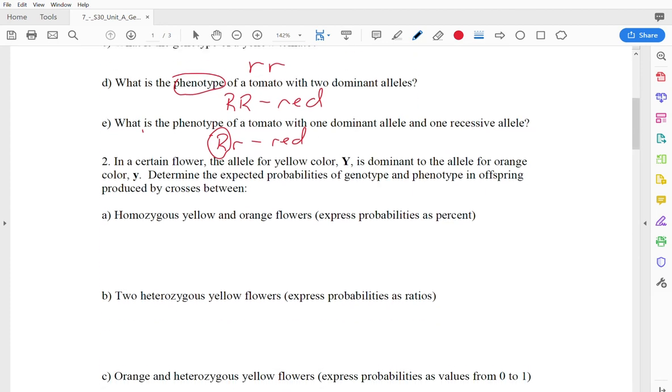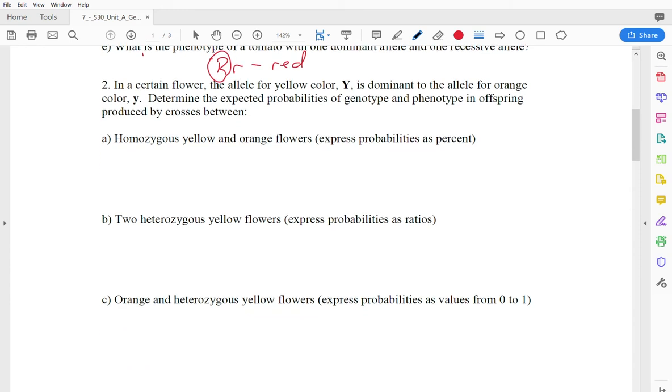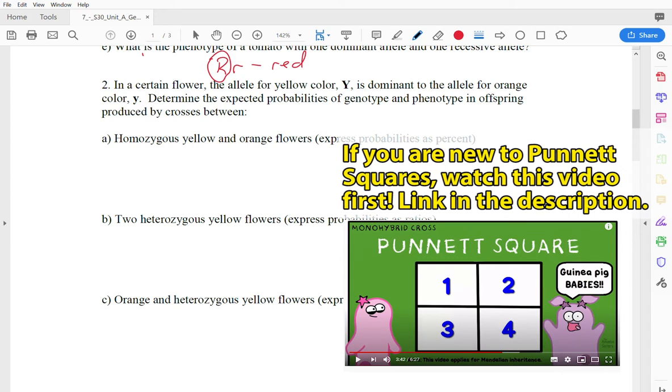Number two says in a certain flower, the allele for yellow color capital Y is dominant to the allele for orange color lowercase y. Determine the expected probabilities of the genotype and phenotype in offspring produced by crosses between. And we're going to do three different examples. So we're going to start off here with homozygous yellow and orange flowers, and we're going to figure out the probabilities of each. So let's figure out how to do this. We're going to use a Punnett square for this.